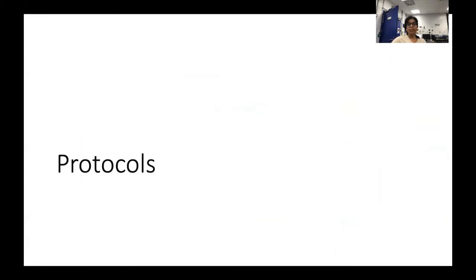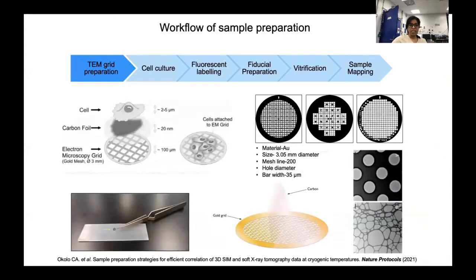Now I'll take you through the workflow of sample preparation before imaging. The first step is TEM grid preparation. At B24, we use gold TEM grids with carbon coating to enable good cell attachment. Here in this image, you see this flat 3 mm in diameter gold grid with carbon coating.